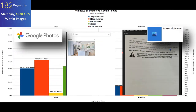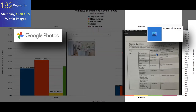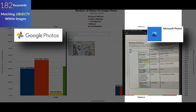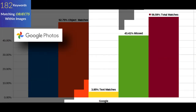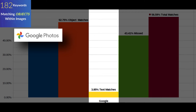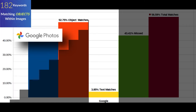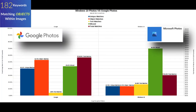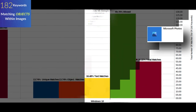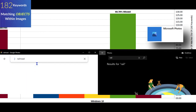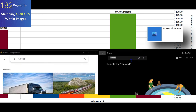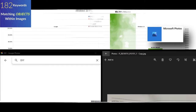Text matches are when searching a word returns an image that contains that actual word or part of it. Out of 182 random keywords, Google returned a text match only 3.85% of the time — very minimal. But Windows 10 returned a text match result 16.48% of the time, so we see a silver lining forming for Windows 10: it does better at associating keywords with actual text within the image.